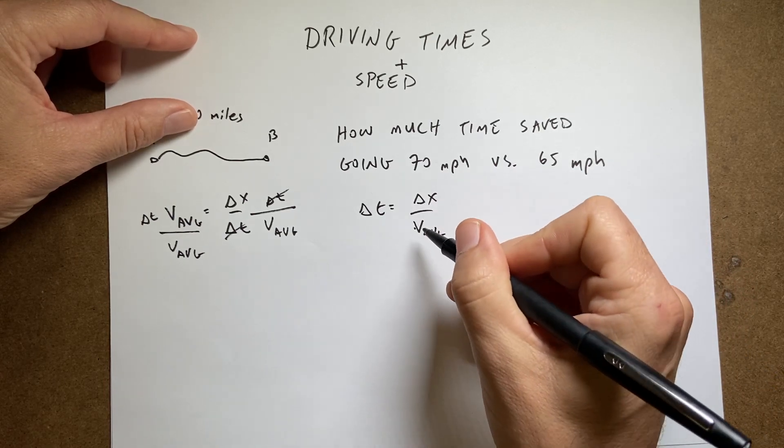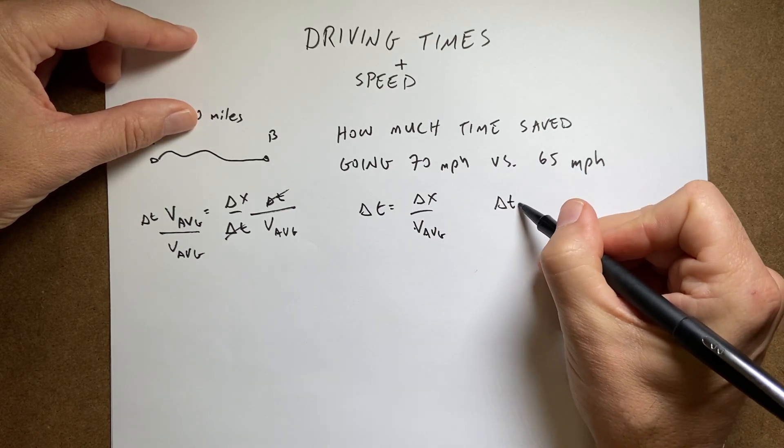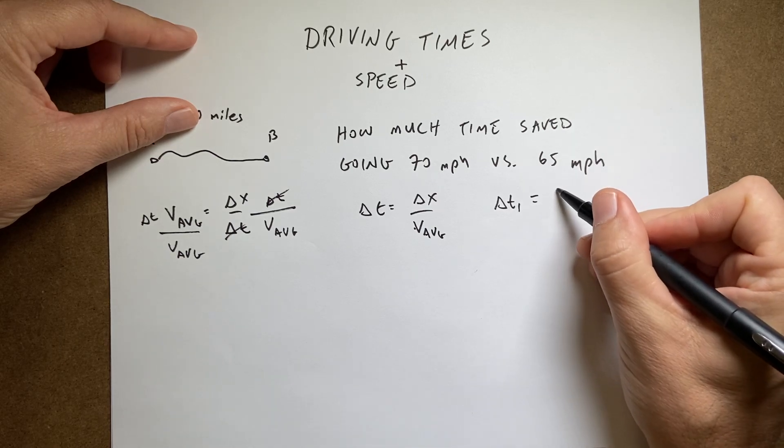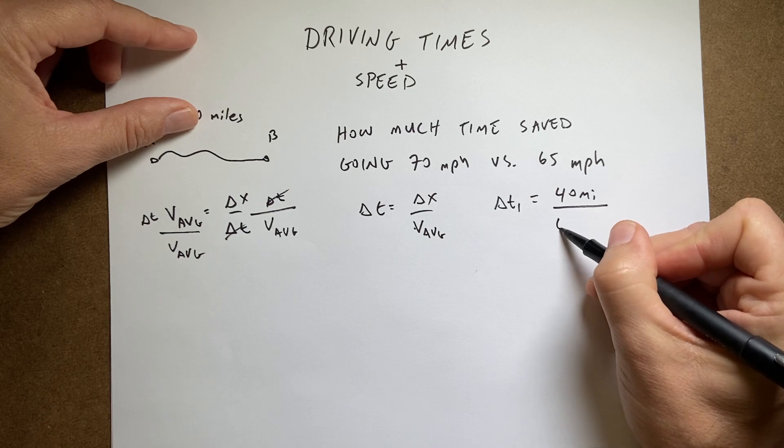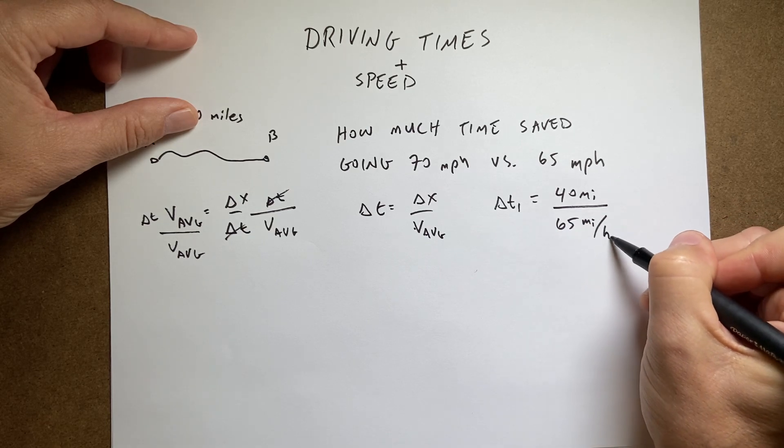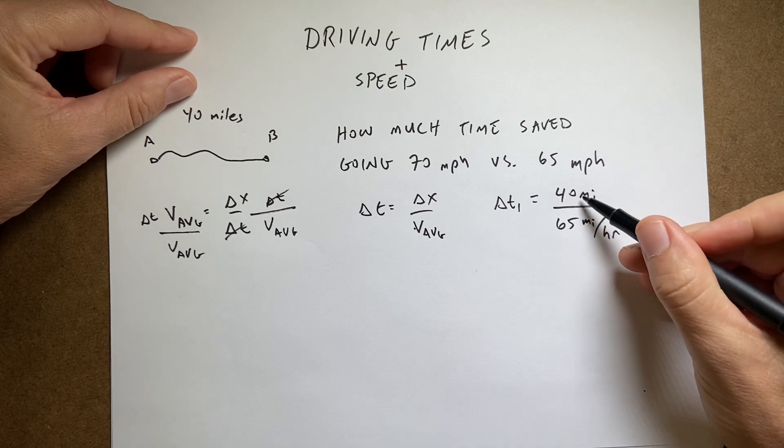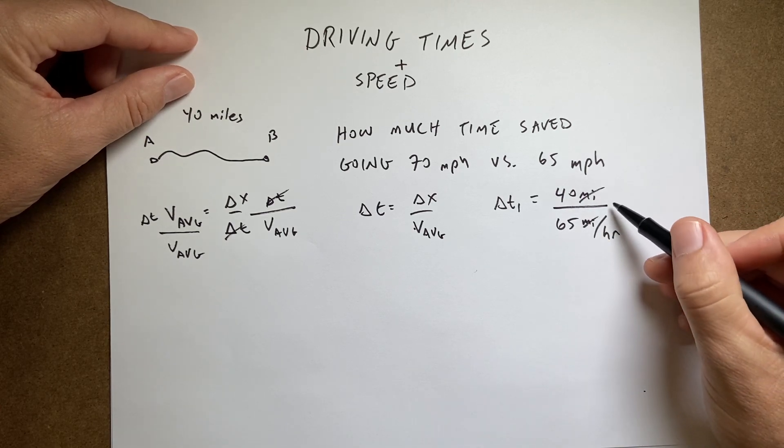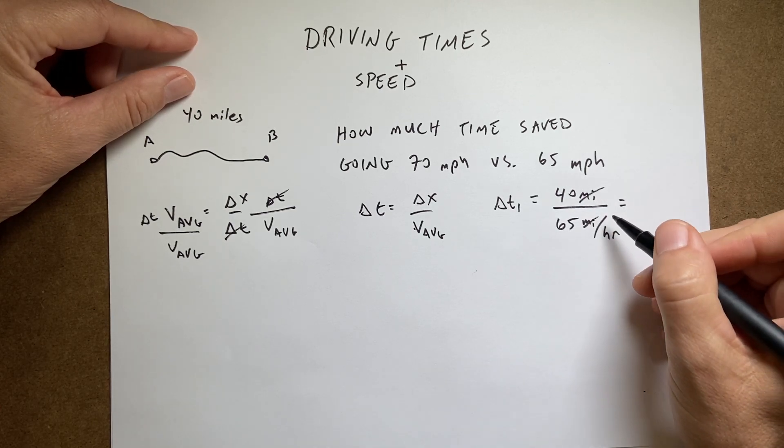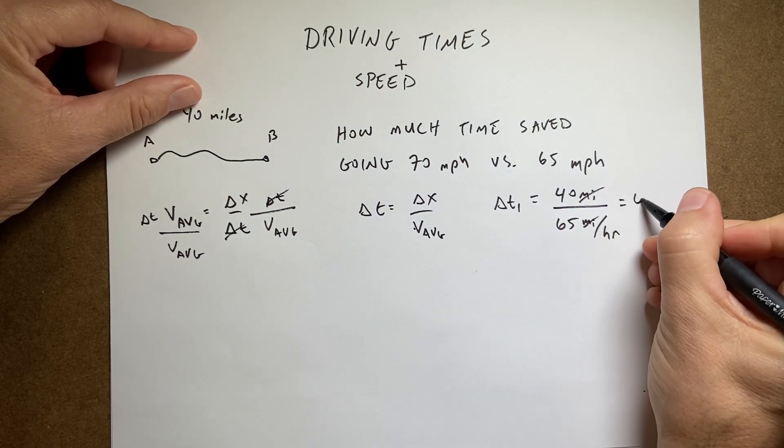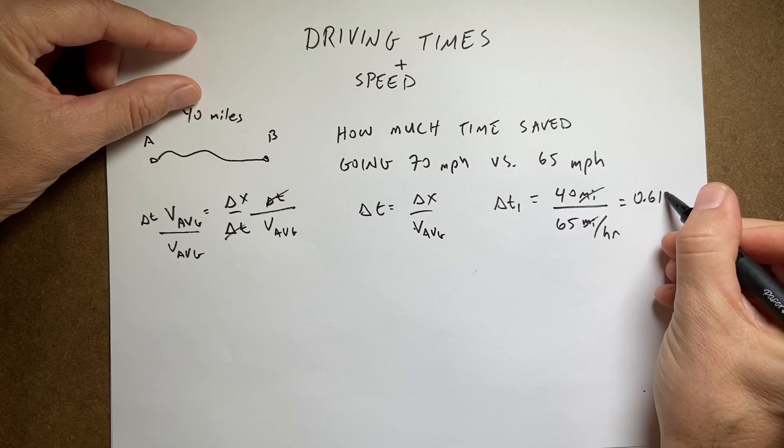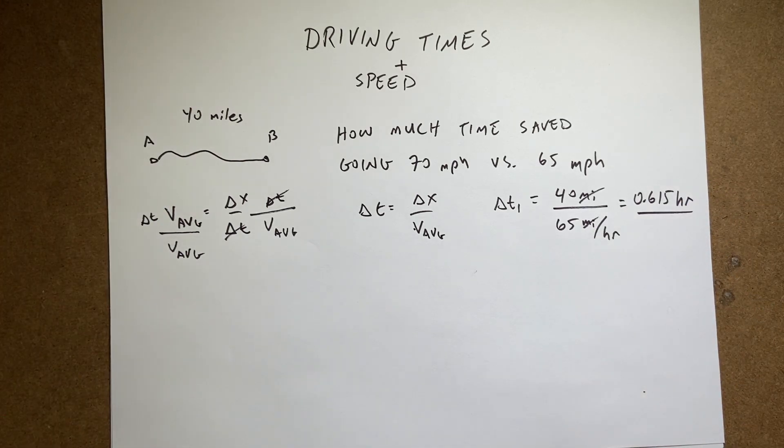So let's call this delta t1 for the 65 case. It's going to be 40 miles divided by 65 miles per hour. Now you'll see here that the mile units do indeed cancel, and I get units of hours. So if you put this in your calculator, it's not too hard. You get 0.615 hours. That's how long it took.